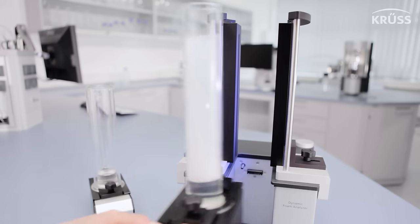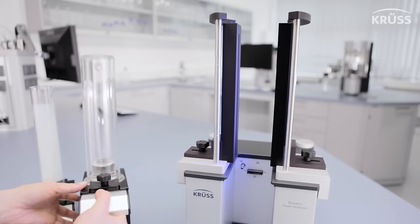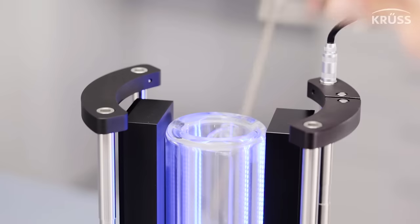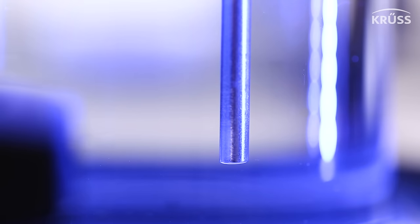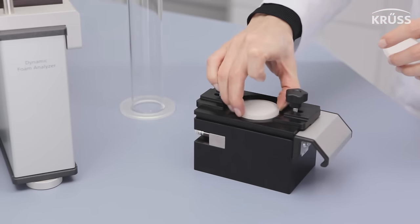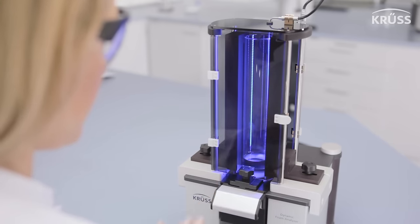The DFA 100 is designed as a modular instrument with many accessories available, like double-walled columns which allow temperature control monitored by a sensor placed directly in the foam, numerous filter plates to control the initial bubble size, a light protection set to block external light, and many more.